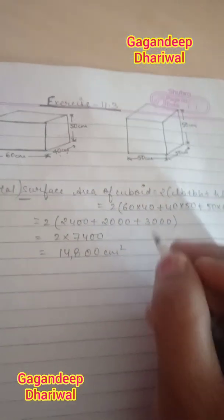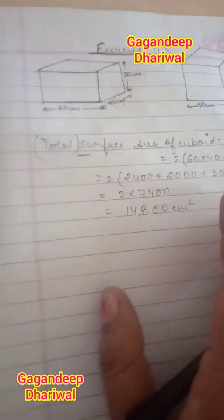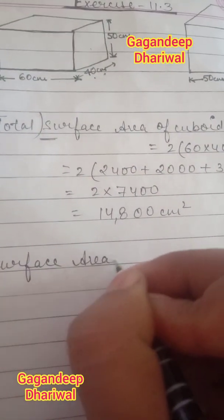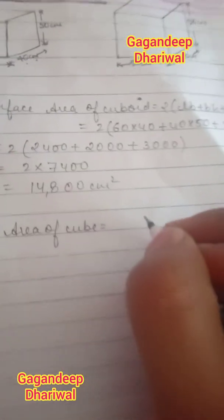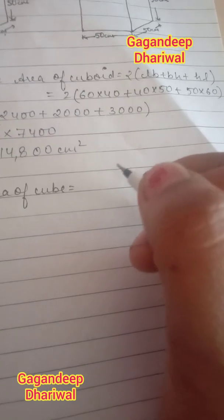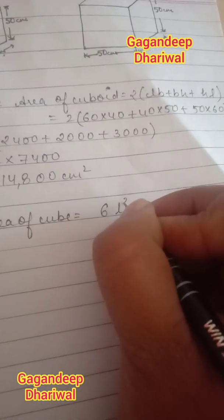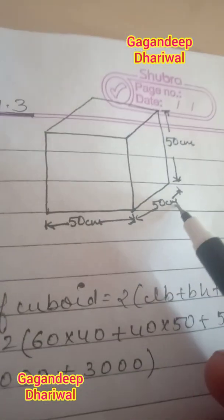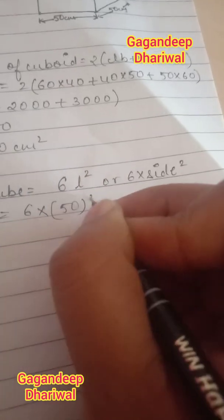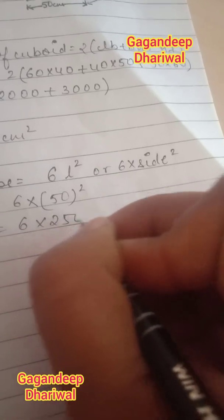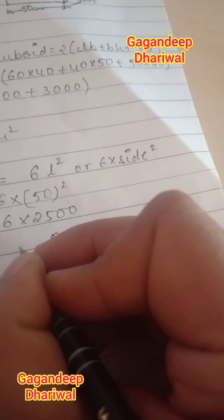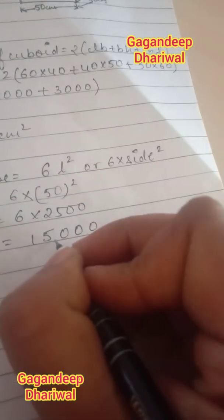Now let us solve the surface area of the next shape, which is in the form of a cube. The surface area of a cube: there are six faces and each face is a square, so the area of each face is side squared. Therefore, the surface area of a cube is 6 × side². The side of this cube is given as 50 cm, so: 6 × 50² = 6 × 2500 = 15,000 cm².